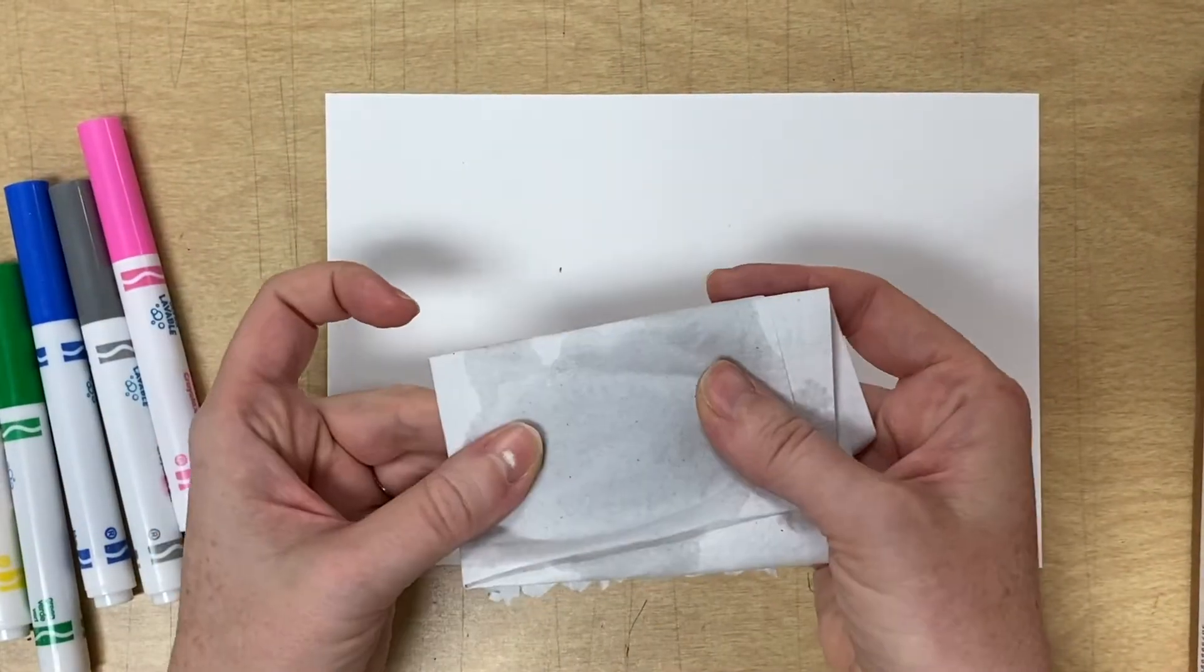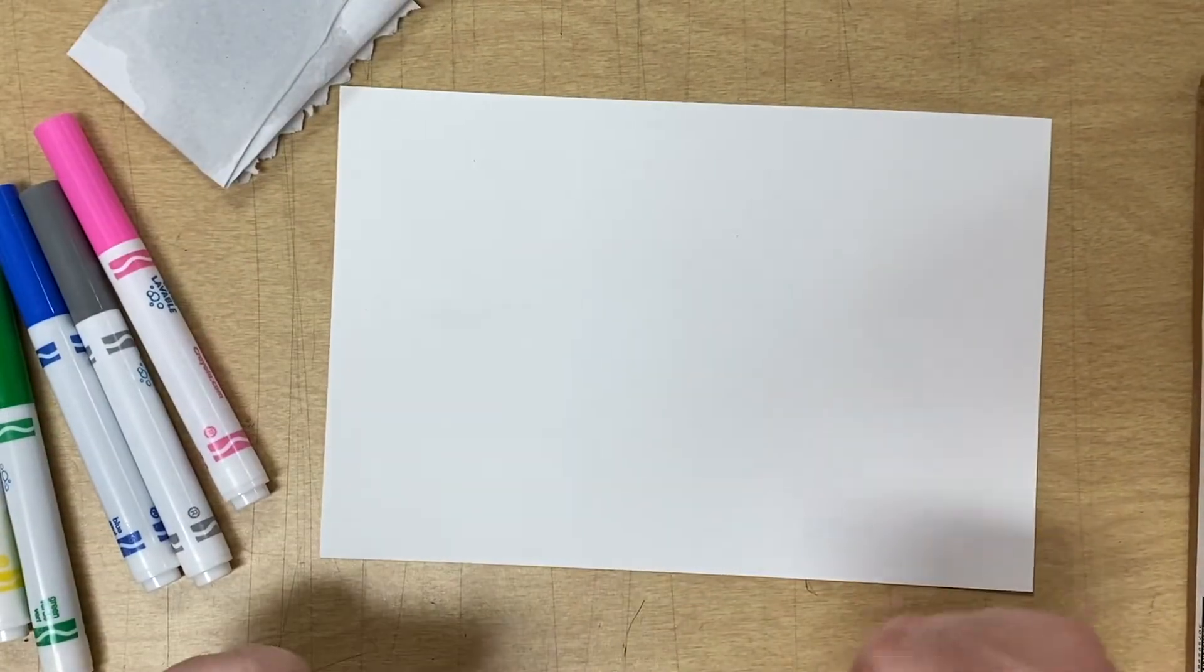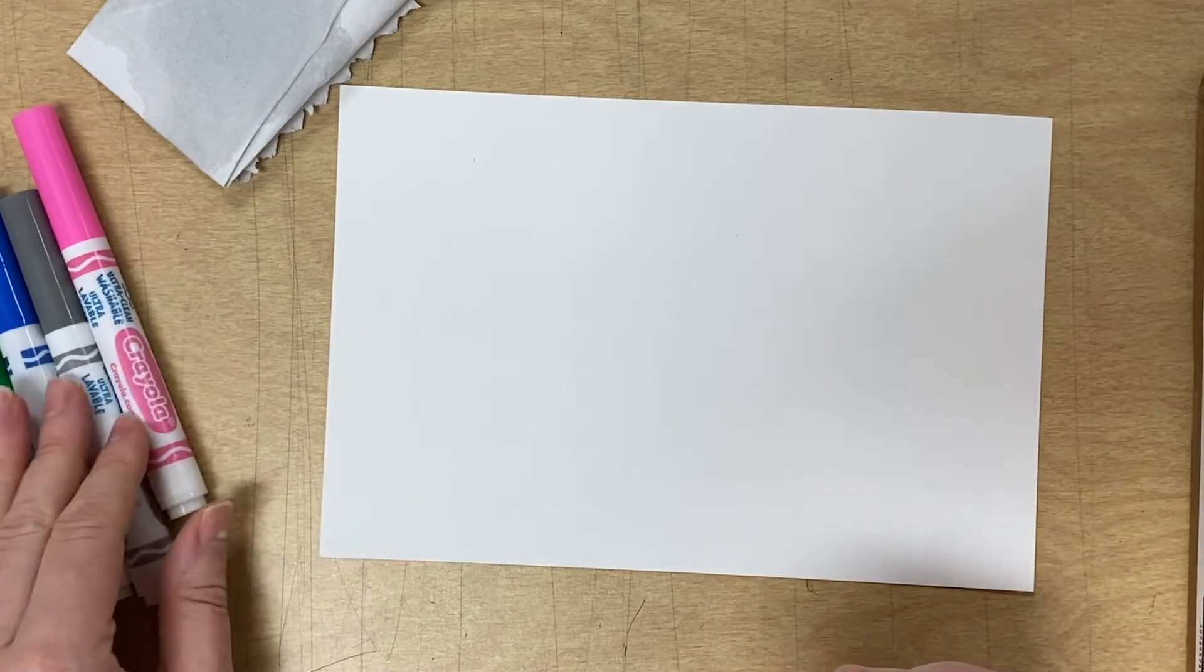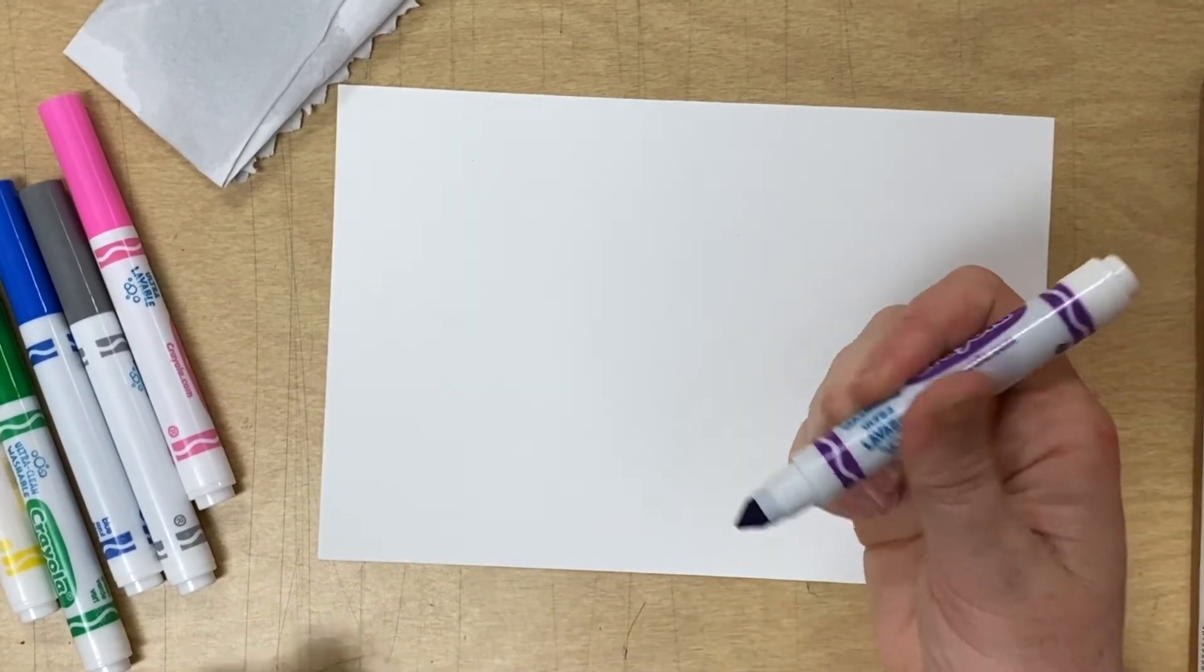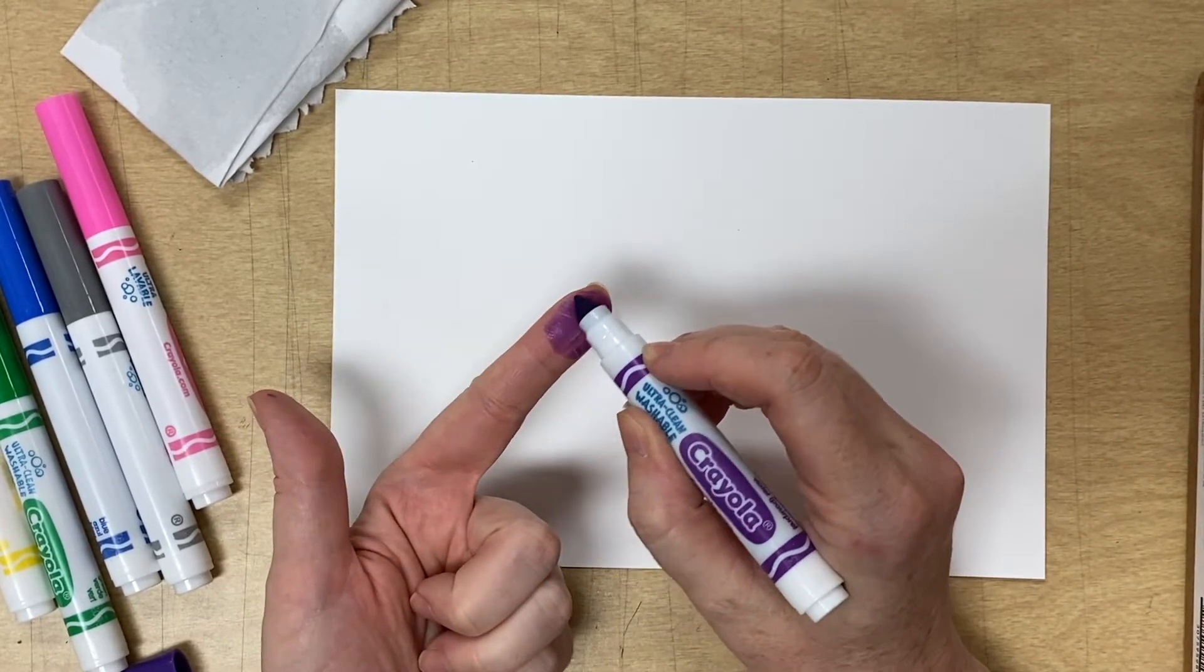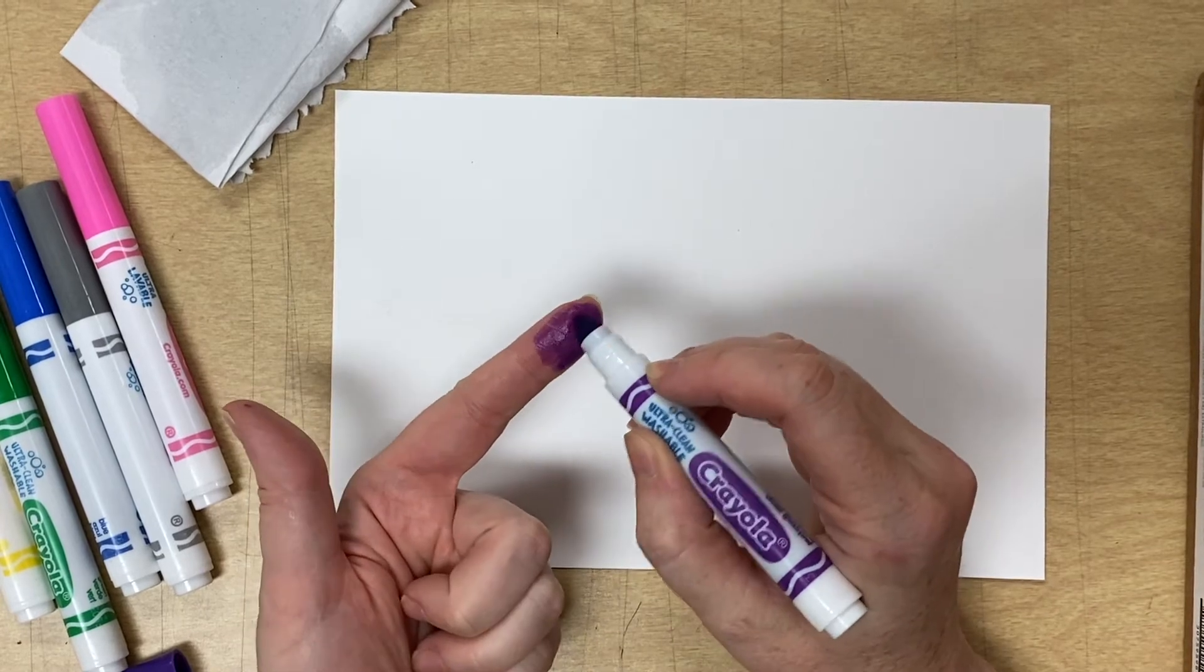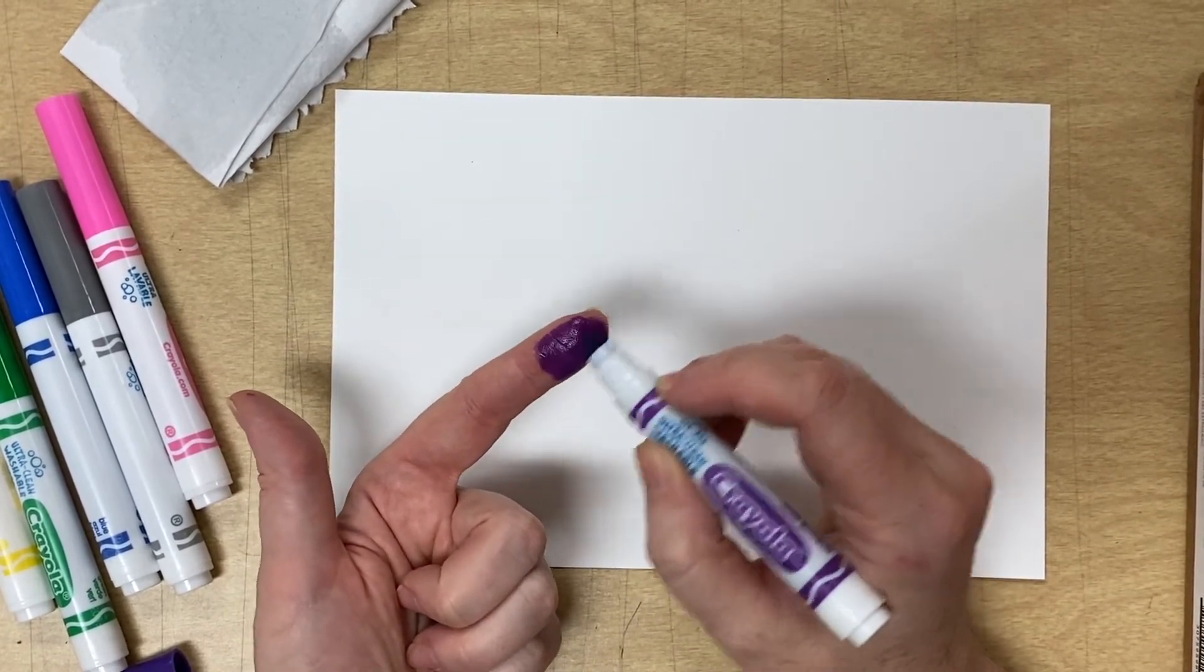The way we're going to make fingerprint art today is we'll be using markers and you'll need a paper towel with a little water on it or maybe a sponge. You're just going to take one of the markers and you're actually going to color your finger with the marker. Usually we say don't draw on your hands, but today you get to.